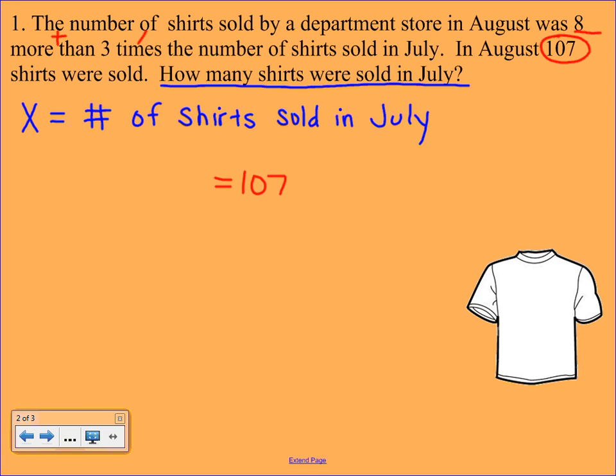Now we just put this into our equation. So 3 times the number of shirts sold in July - well, the number of shirts sold in July is what we chose for x, so that's going to be 3x. And I have 8 more than that, so I'm going to be adding 8 to that. And here we have our two-step equation.